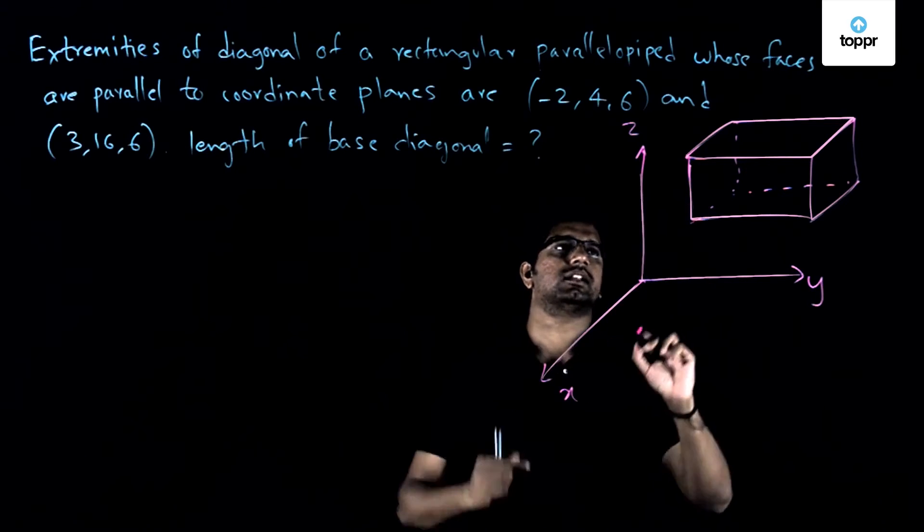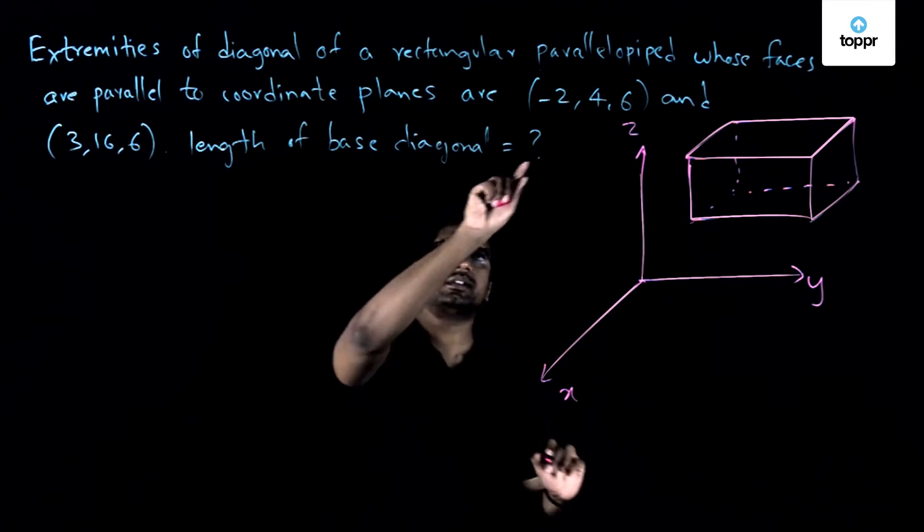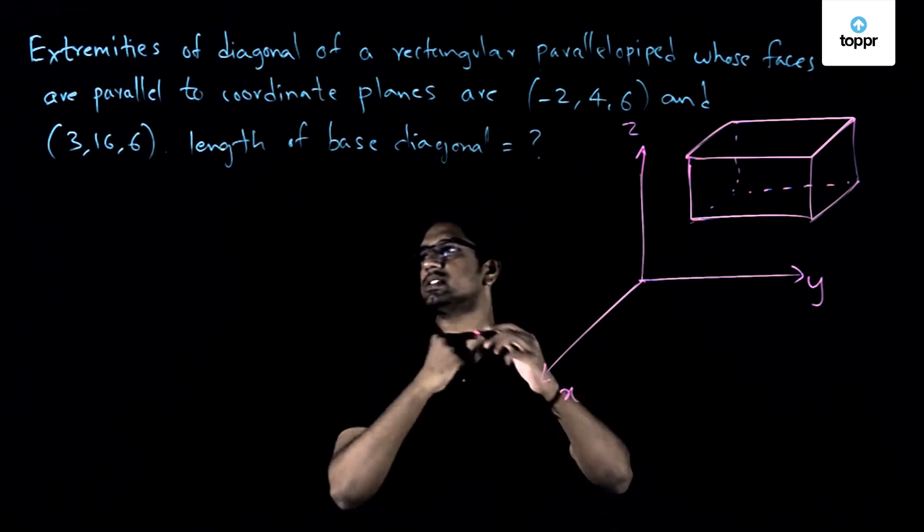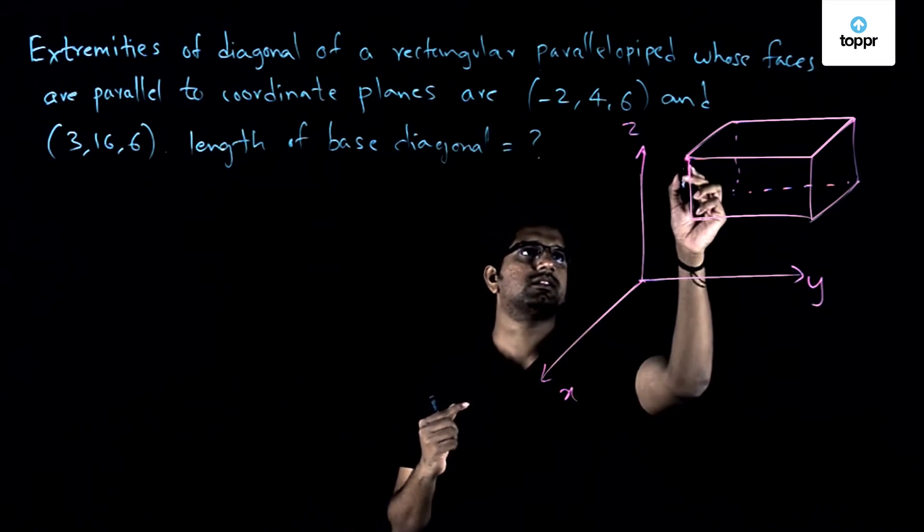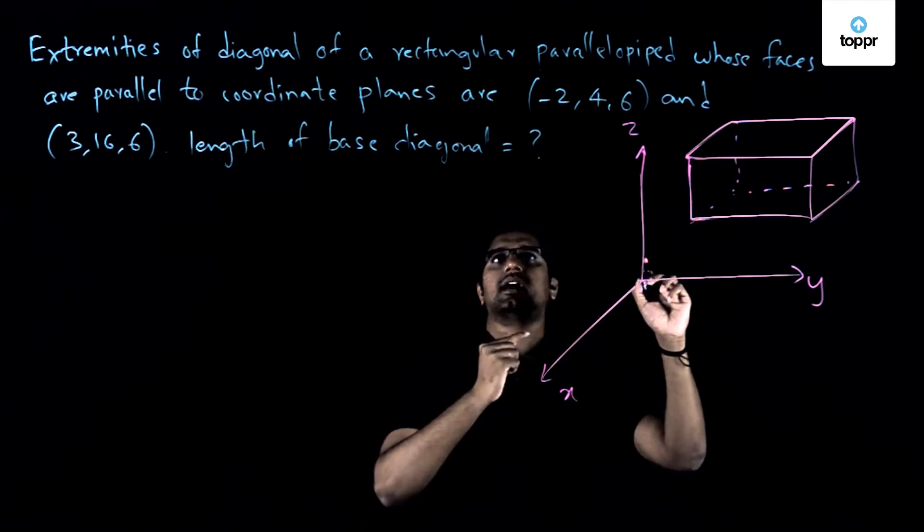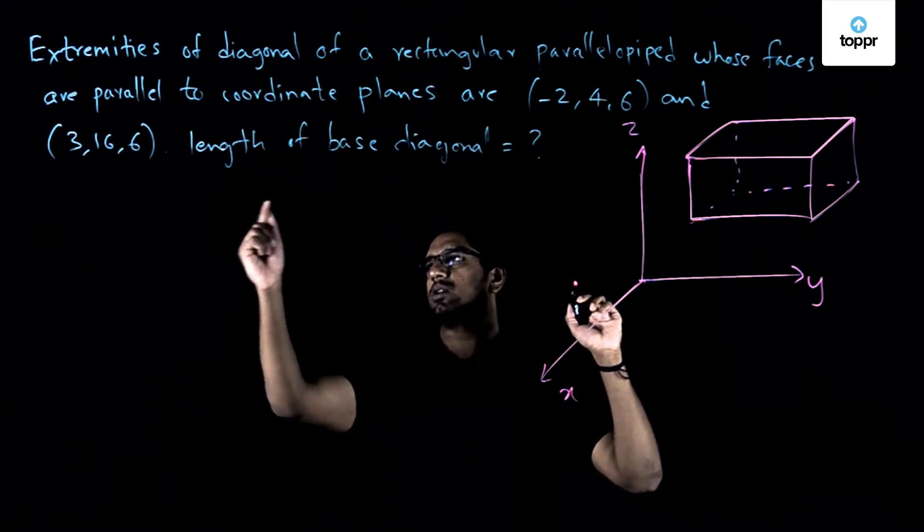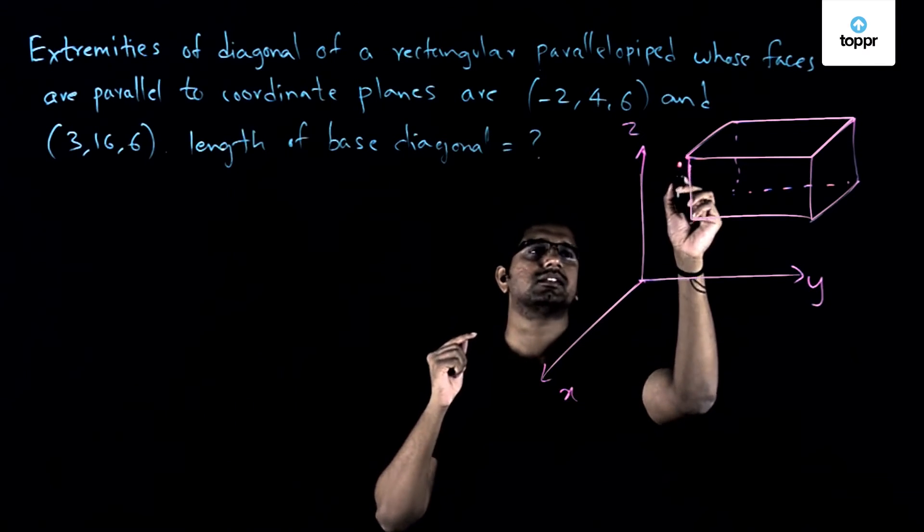And further if you see, then the x and the y coordinates are varying. So what it means is that this point actually corresponds to, so let's take this point as (-2, 4, 6).